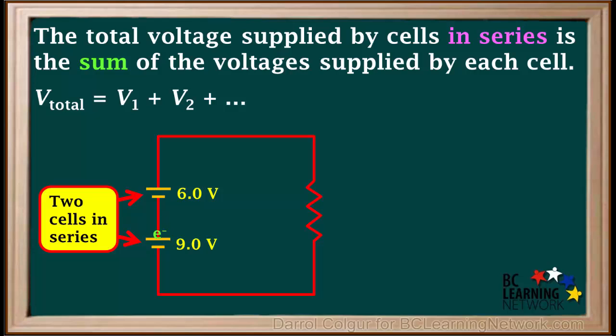Then as it goes through the 9-volt cell, its electrical potential increases by another 9 volts. So passing through both cells, its electrical potential goes up by a total of 6 plus 9, or 15 volts.